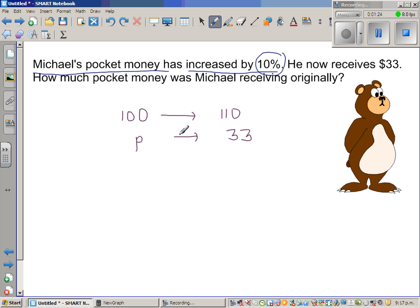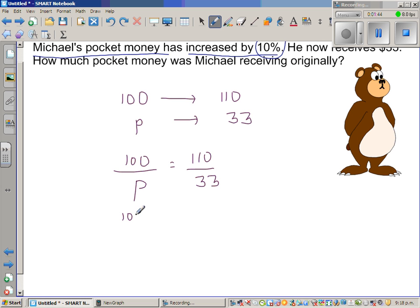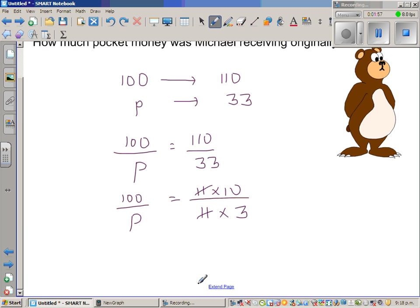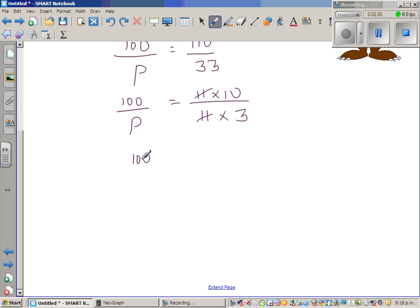So this is nothing but an example of ratio. The ratio of this is equal to the ratio of this. I can say 100 over P is equal to 110 over 33. I can write this as 11 times 10 over 11 times 3. So this 11 and this 11 gets cancelled. So this is 100 over P is equal to 10 over 3.